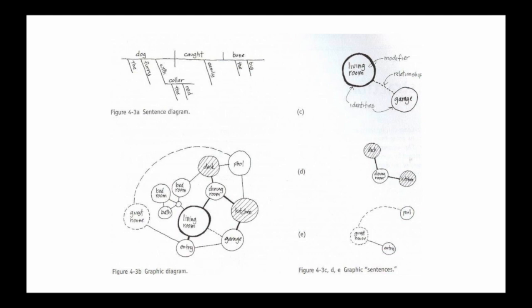When we start to think about spaces — public spaces, private spaces — we start to see that diagram of a typical house. It takes on some of the similar structure of relationships, connections, and even graphic hierarchy. When we talk about graphic hierarchy, what's the first thing your eye goes to in that bubble diagram? The living room takes a certain precedence over the other subspaces, and we can start to see key relationships between these spaces. There's a graphic hierarchy that leans towards the living room itself.